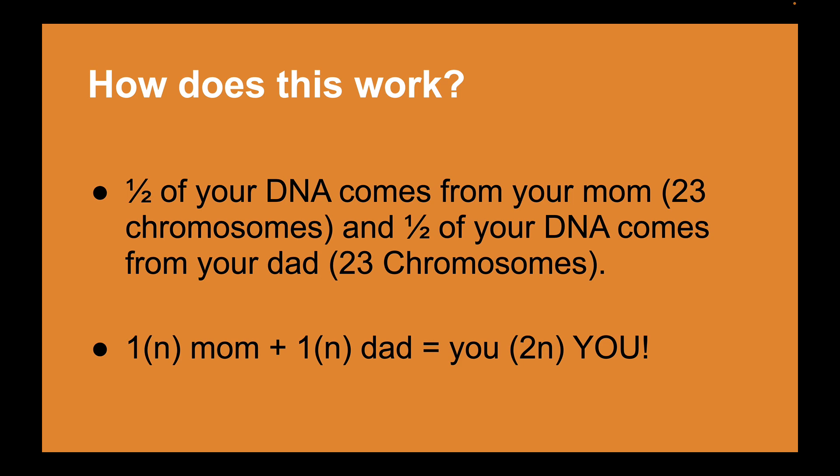How does this work? Half your DNA comes from your mom — 23 chromosomes — and half from your dad — 23 chromosomes. If you get one set from each parent, you end up with two sets. The symbol 'n' means one set of genetic information, so 1n means one set and 2n means two sets. One set is referred to as haploid — gametes are haploid cells. Two sets is diploid — a zygote is diploid, and so is a full-grown adult.